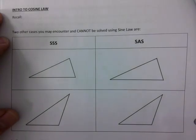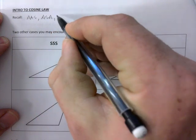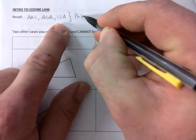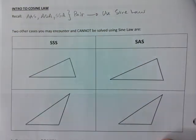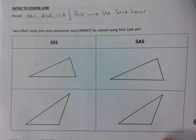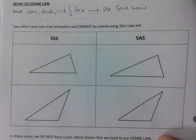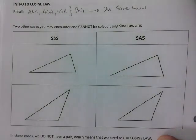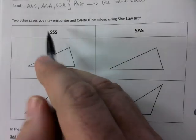Intro to cosine law on page 23. Recall that ASA and SSA were the three scenarios that the sine law can solve. If you were to sketch these, you end up with a pair, which means you use sine law. I just want you to know that if there's a pair, you use sine. This is the hidden pair — two angles on either side and the side connecting them. Two angles gives you three angles in a triangle, so always remember that.